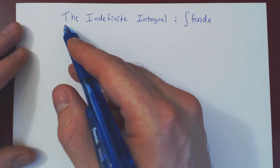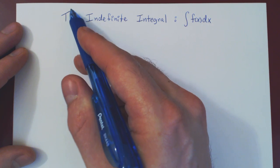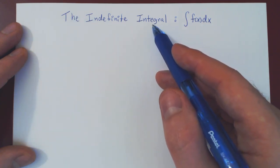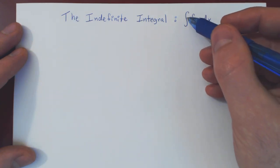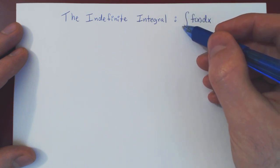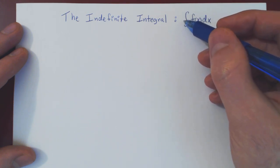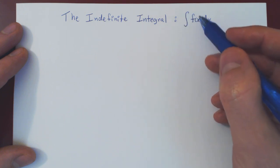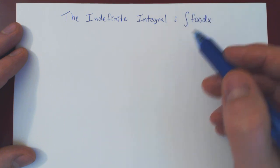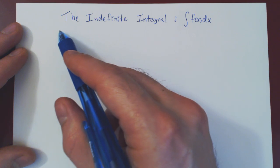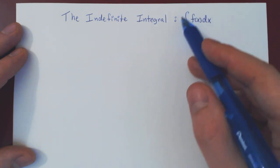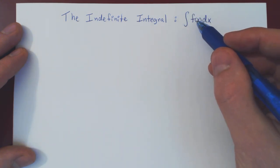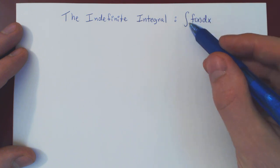Well, there it is. So the indefinite integral of a function — and here's how it's denoted. This stretched out S stands for integral. So this reads: the integral of f of x dx. This is called the indefinite integral, and all this is, is the collection of all antiderivatives of f of x.